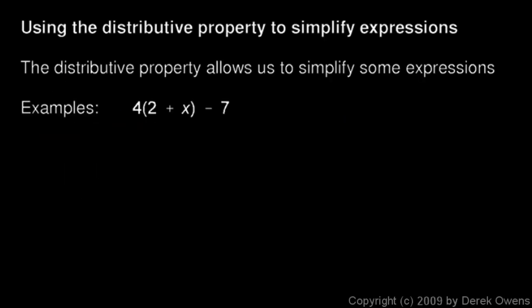And one more quick topic here, using the distributive property to simplify expressions. In this case, we have 4 times 2 plus x minus 7. If we distribute here, this is 4 times 2, which is 8, plus 4 times x, which I'll write as 4x. And then we have the minus 7. And the 8 and the minus 7 can be combined here into a 1. So this is just 1 plus 4x, and we would typically write that as 4x plus 1.